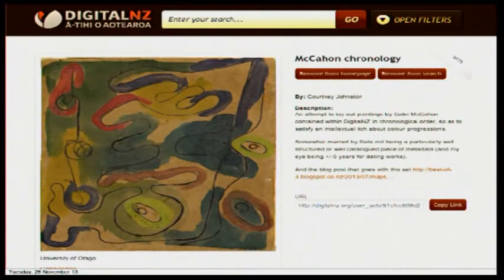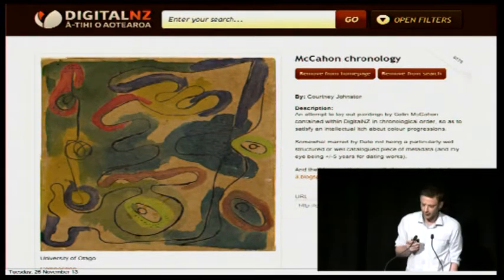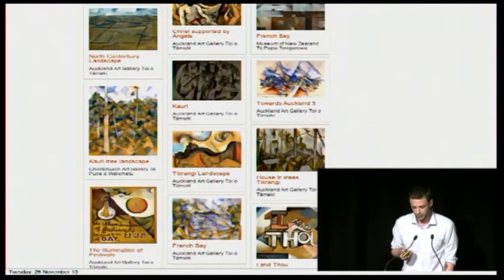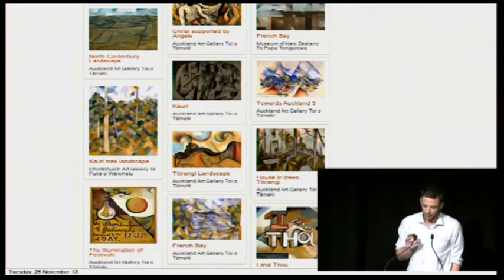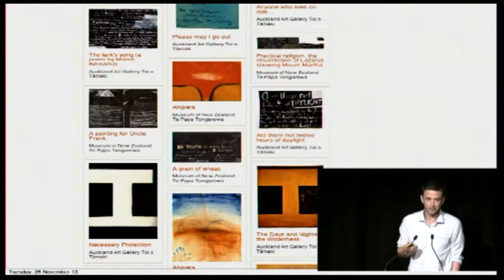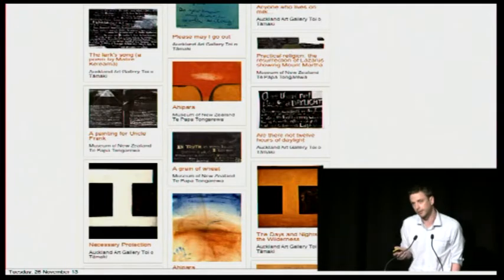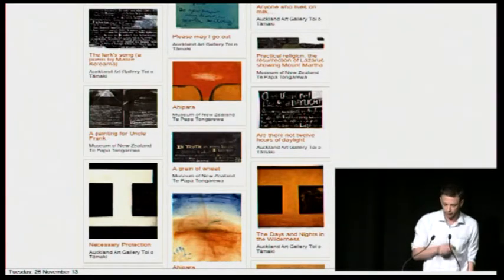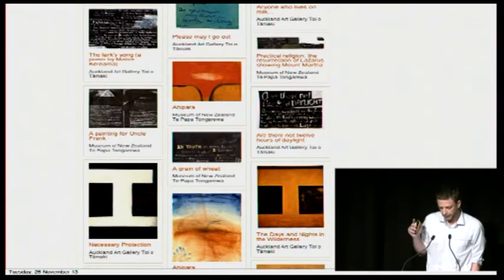Some time ago, Courtney Johnston made a Digital New Zealand set where she organised Colin McCann's work into chronological order. Her sets pull paintings and sketches from collections up and down the country, and she presents them together as a rough progression. I imagine it took her hours. She's created a handful of similar sets for other artists, such as Anne Noble and Fiona Partington. The end result is that wonderful combination of something that is at once beautiful and useful. However, it is unsustainable and it doesn't scale.